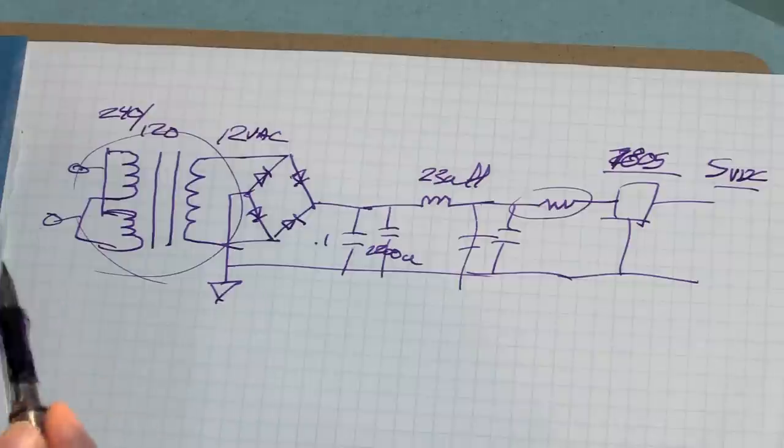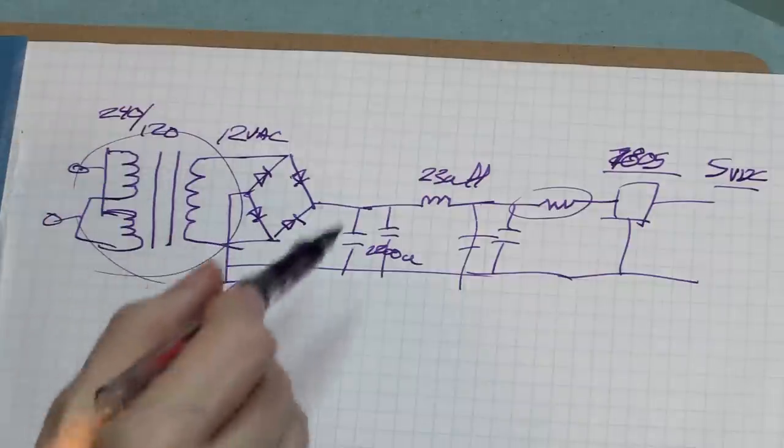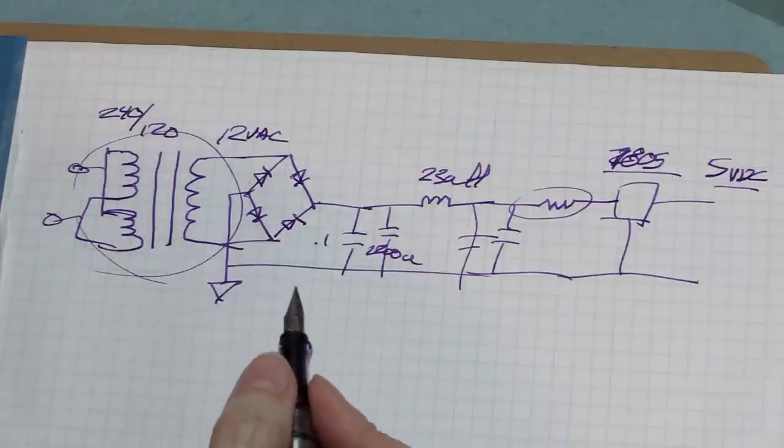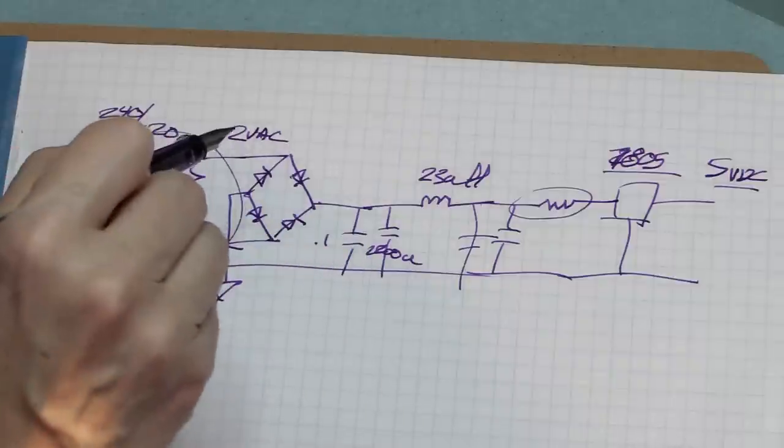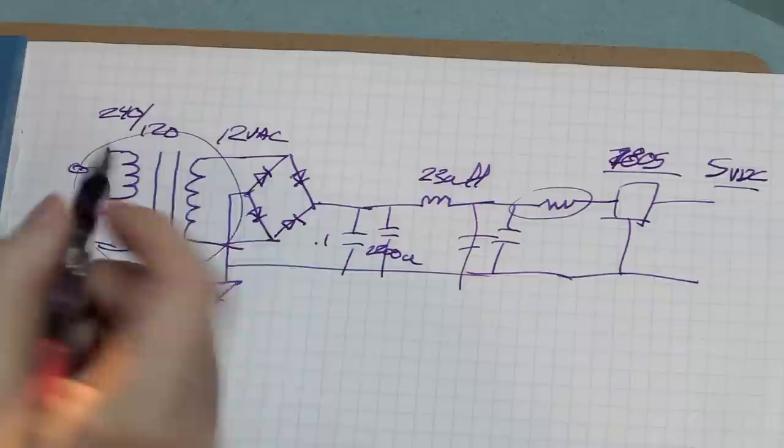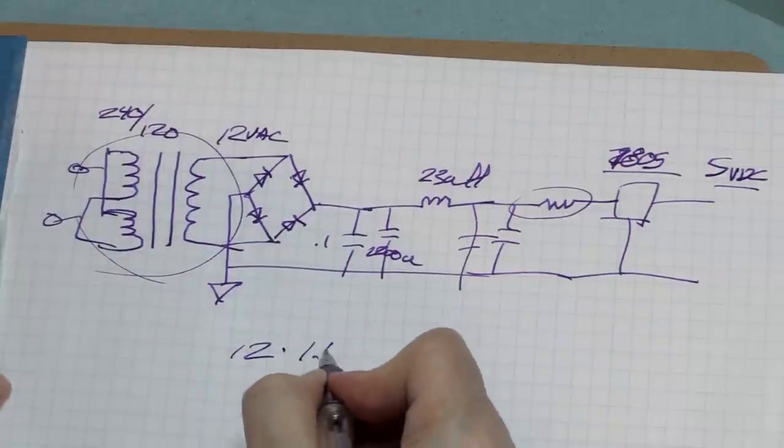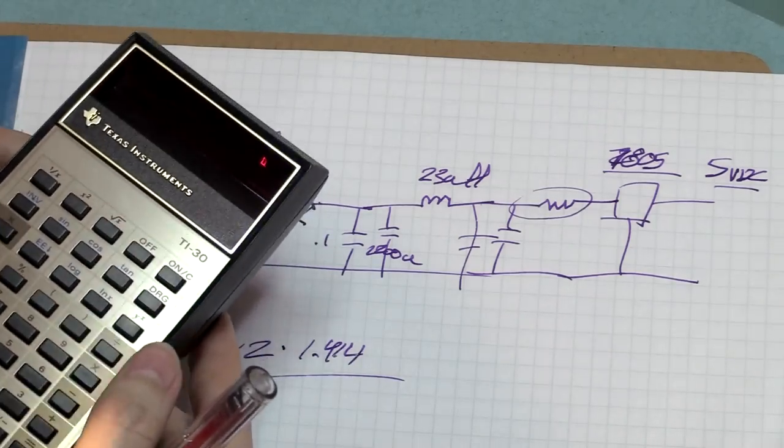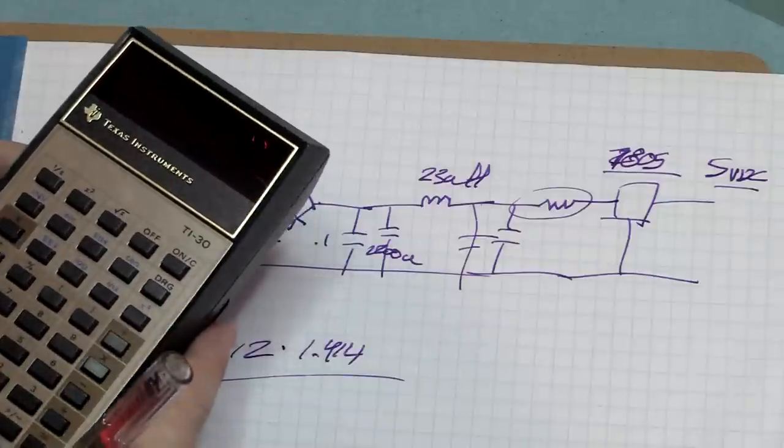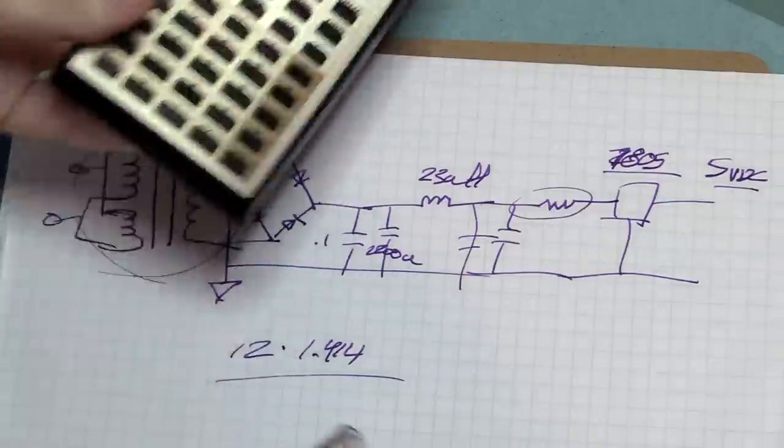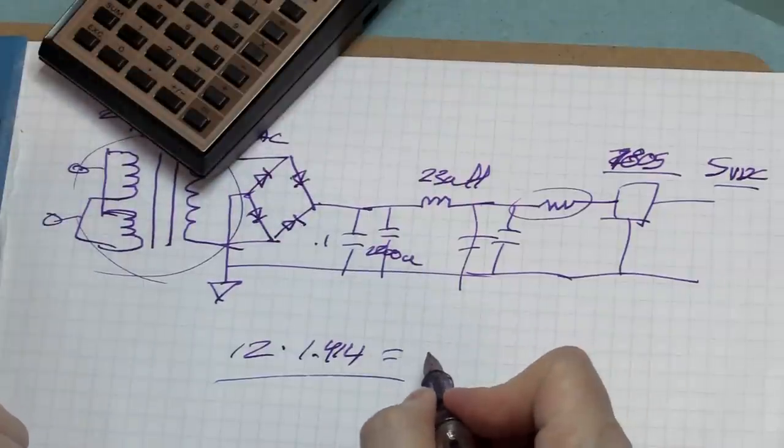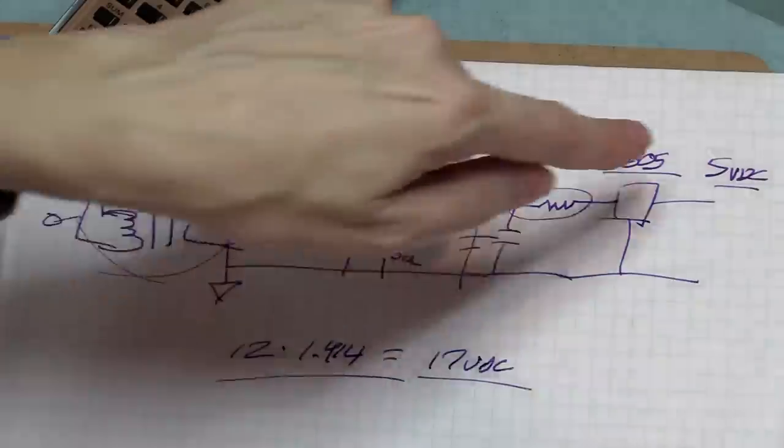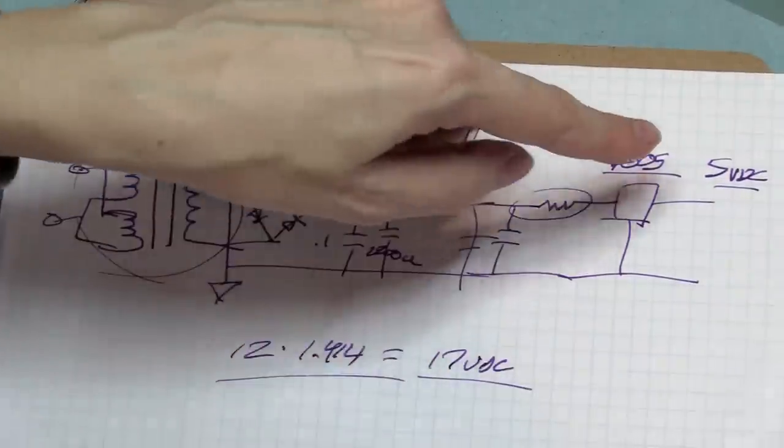So 12 volts AC with a full wave bridge rectifier, without any load on it, you're going to get something to the order of the AC voltage times the square root of two, or approximately twelve times 1.414. That's going to give you pretty close to what the unloaded power supply is going to be - in the area of about 17 volts DC. So it's going to drop 17 to 5, that's a huge jump.